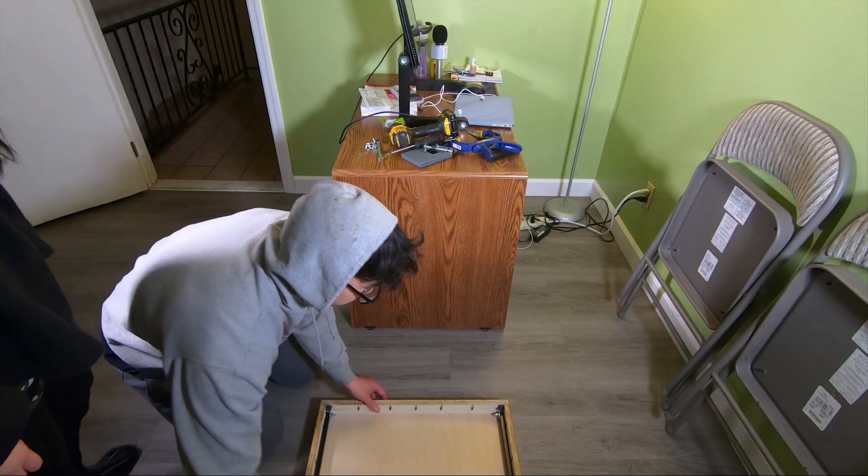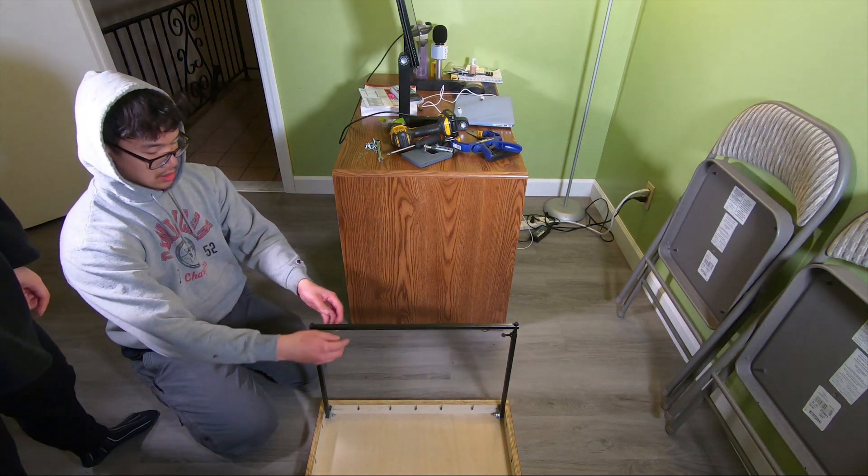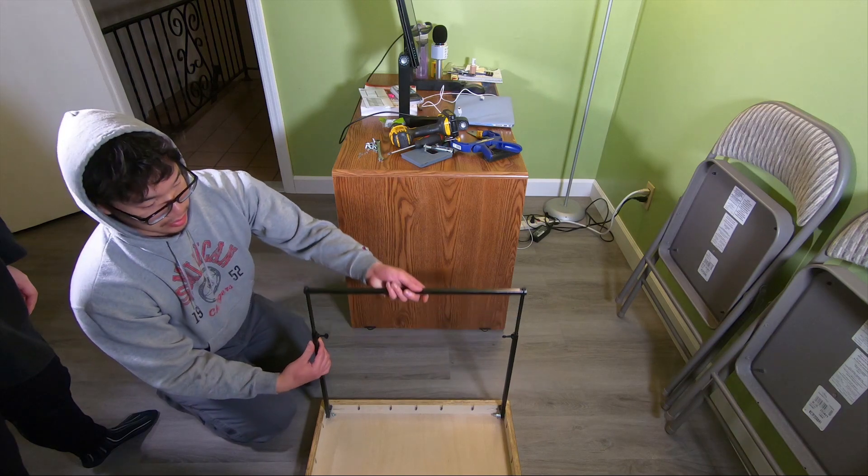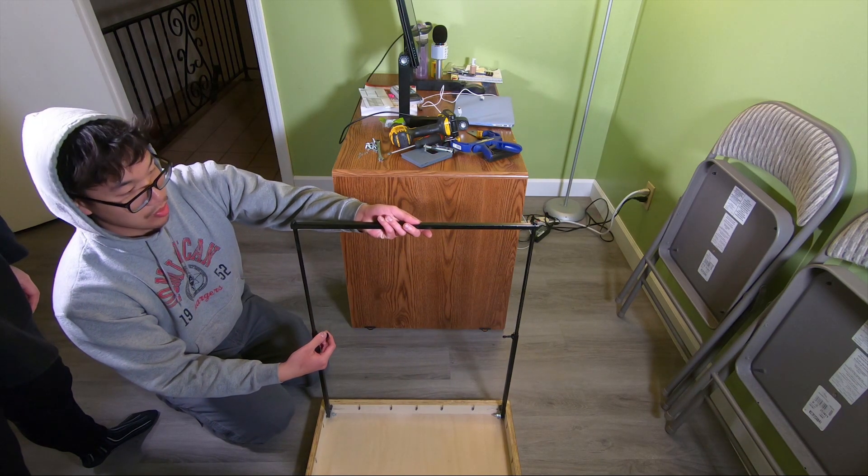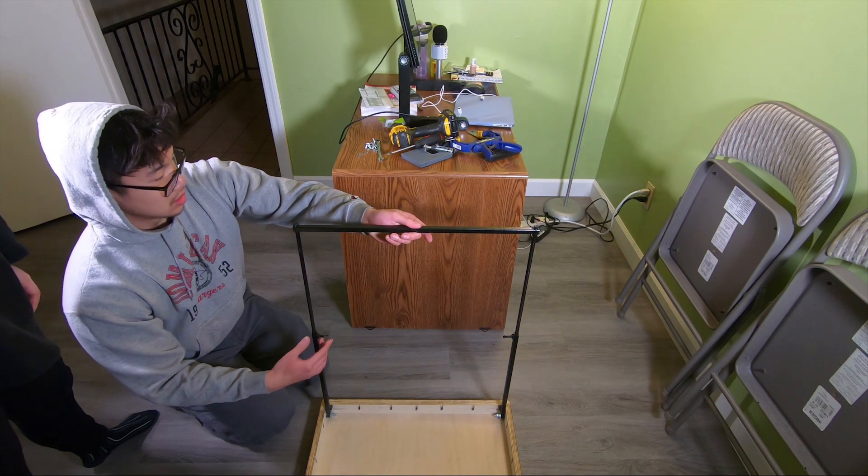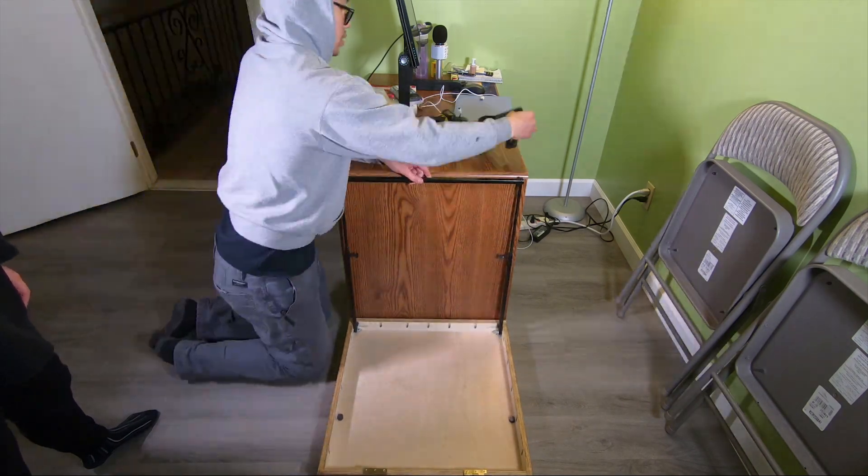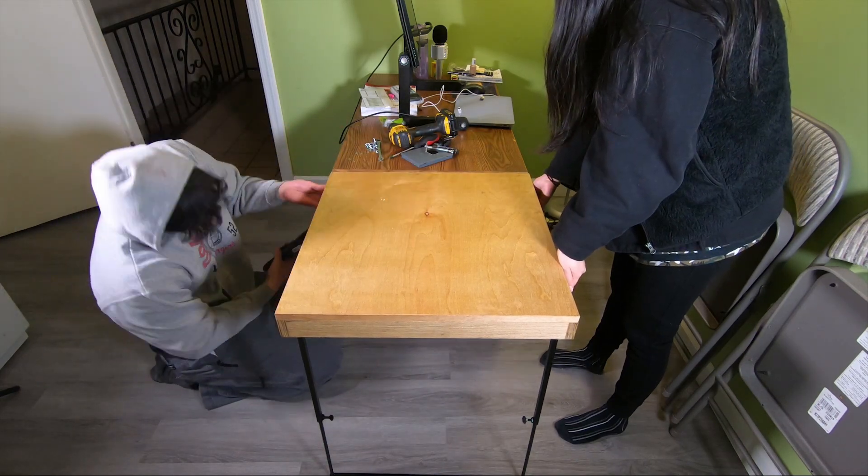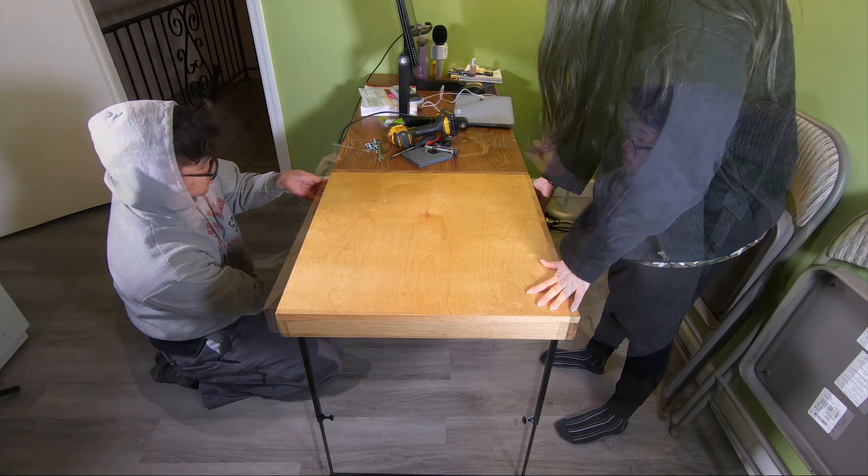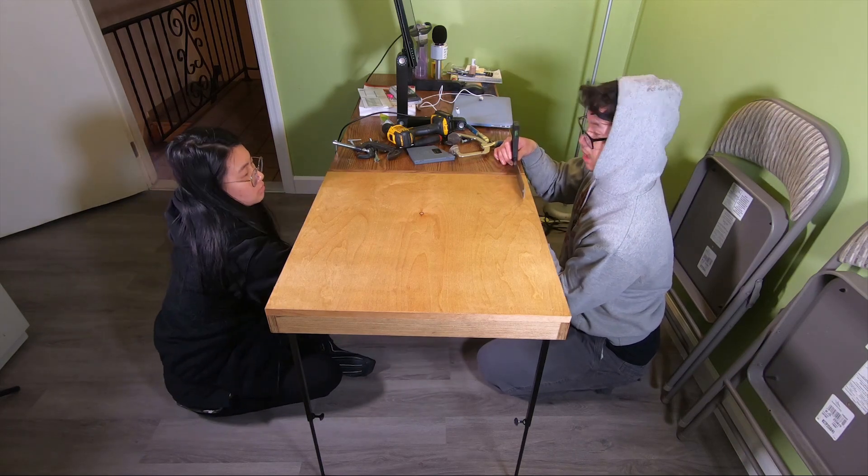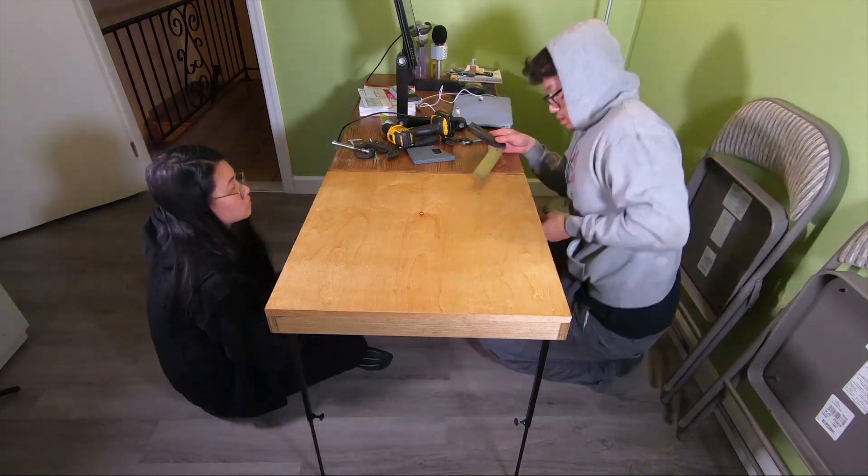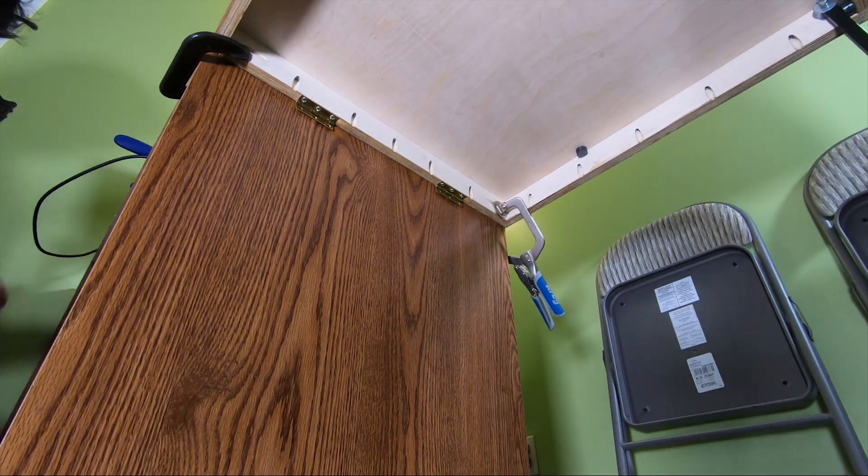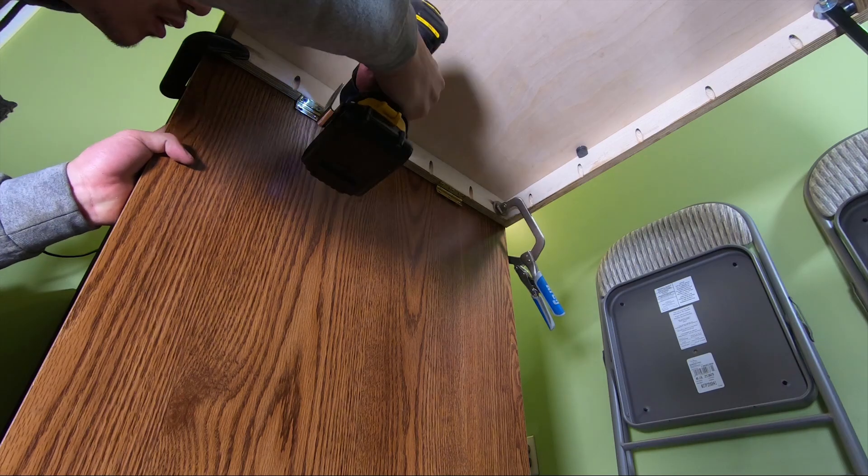Now we can finally install the desk extension. The first thing I did was raise the legs to the same height as the top of the desk, that way they can support the extension and I would only have to worry about supporting the other side of the extension. Next I flipped it over and used some clamps and attached the extension to the desk temporarily. From there I made sure the top of the extension was flush with the top of the desk.